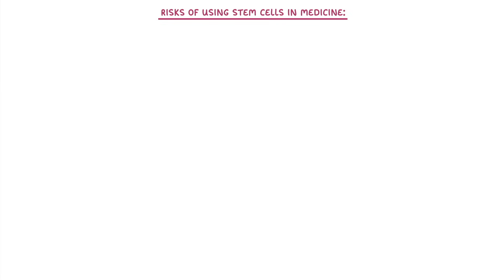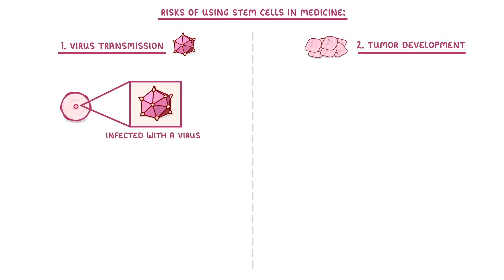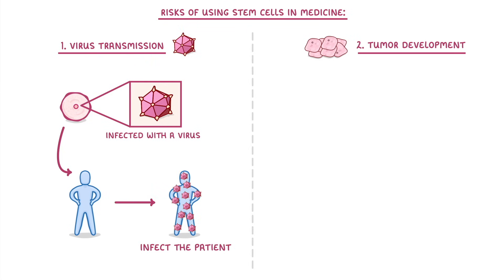Regardless of which type of stem cell we use, there are two potential risks involved: virus transmission and tumour development. Virus transmission refers to the idea that if the donor stem cells are infected with a virus — either before they were taken or while they were in the lab — then when they're transferred into the patient, they'd also transfer that virus, which could infect the patient and cause even more problems.